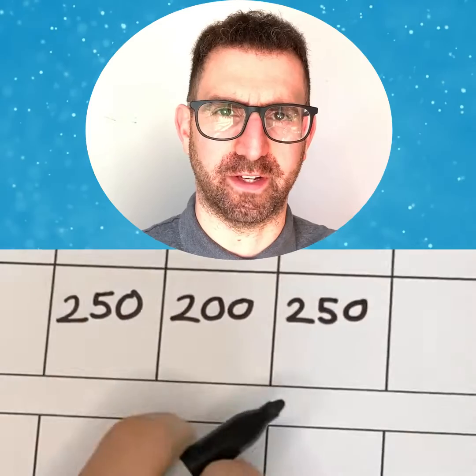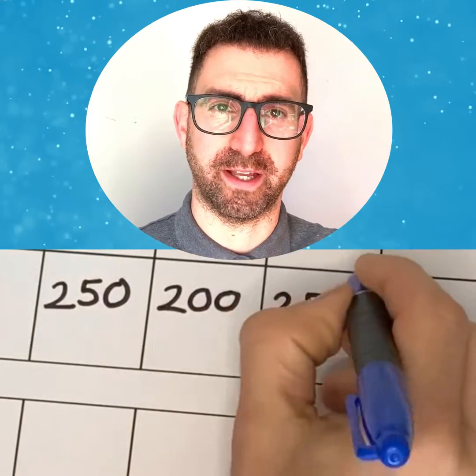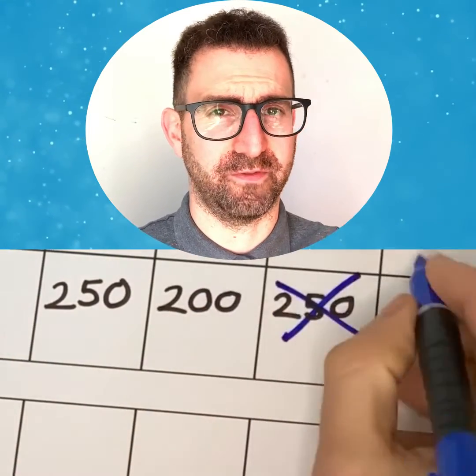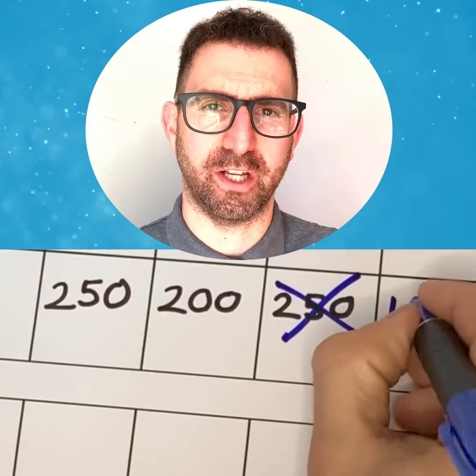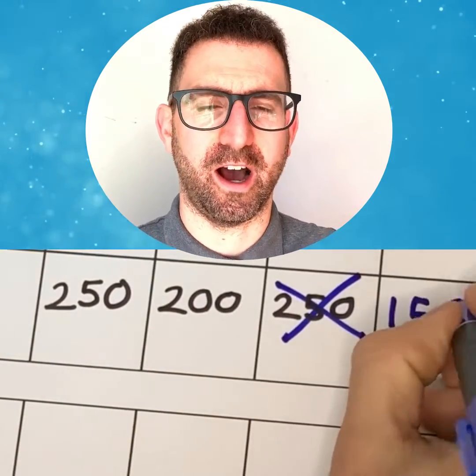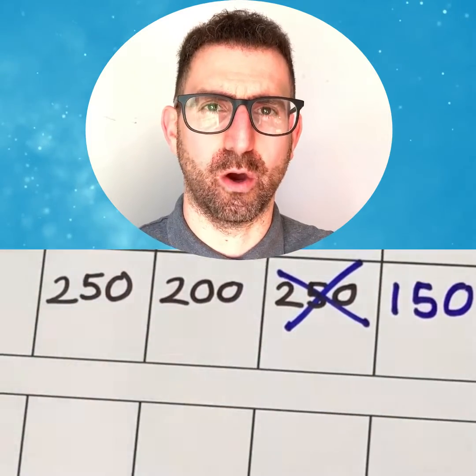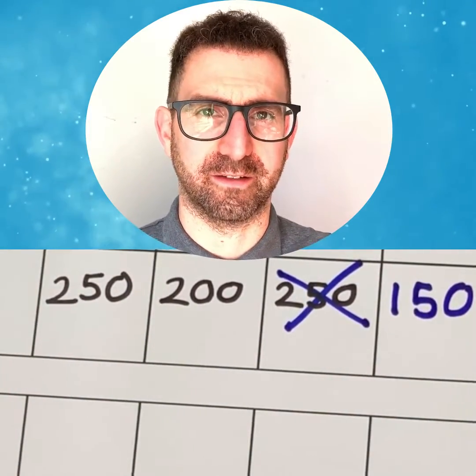Three, and finally when counting backwards we might start counting forwards again when we reach a multiple of 100. For example 250, 200, 250 and so on. When it should be 250, 200, 150, 100, 50.